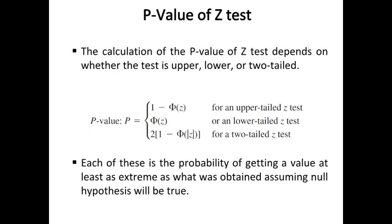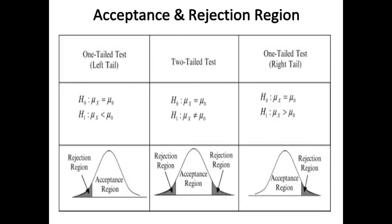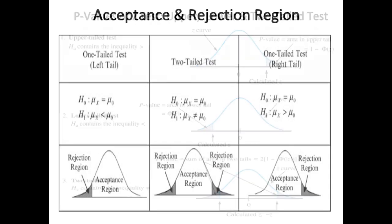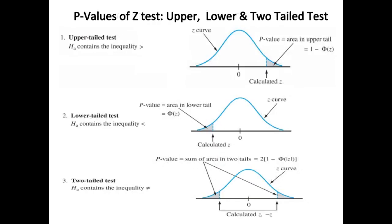First of all, you must know the one-tailed test (left tail), two-tailed test, and one-tailed test (right tail), along with the null and alternative hypothesis and the diagram showing which area is the acceptance region and which is the rejection region. P-values of z test: upper, lower, and two-tailed test.